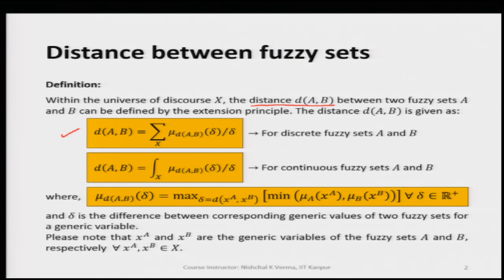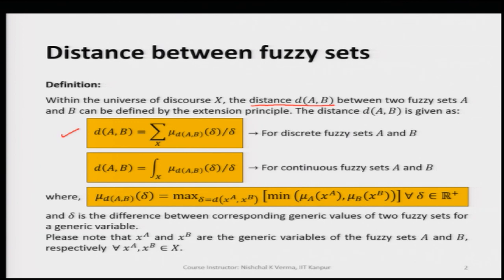As we know, we represent the discrete fuzzy set by this representation. D(A, B) is equal to sigma over universe of discourse capital X, and then we have mu_D(A,B)(delta) over delta. This is the formula for finding the distance between discrete fuzzy sets A and B.